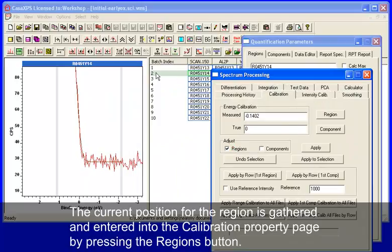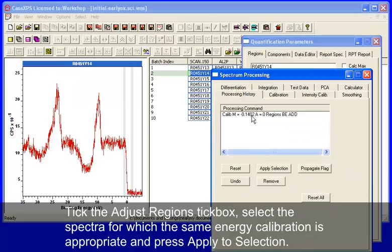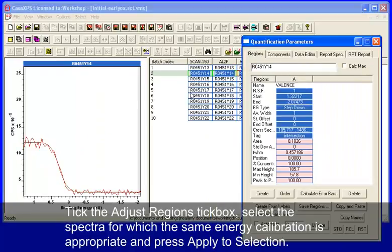We'll then calibrate the row using apply to selection, so we've now calibrated a whole row of spectra based on this Fermi edge.